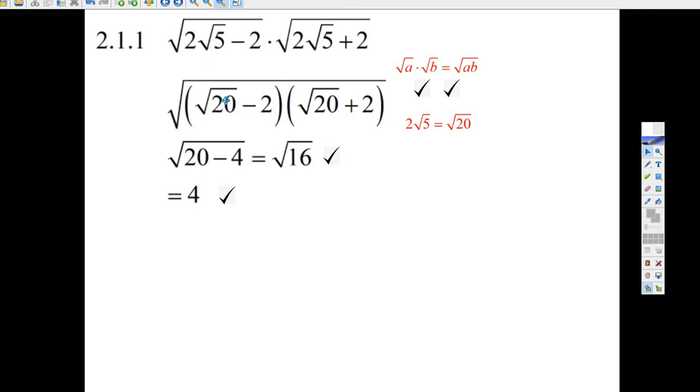And so it's 2 root 5, which is really root 20. That's going to make this easier to do. This 2 root 5 is really root 20, the square root of 4 times the square root of 5. And now you just do FOIL on this.